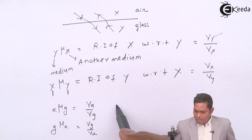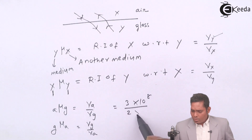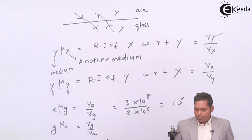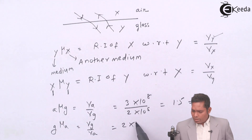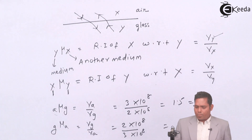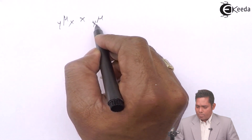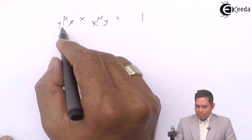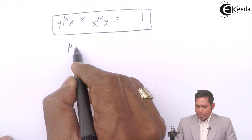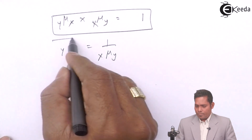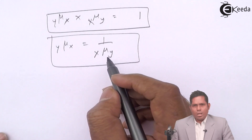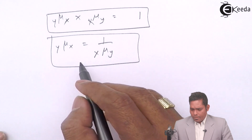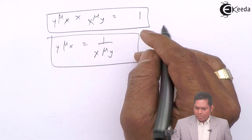For example, refractive index of glass with respect to air is 3 × 10⁸ divided by 2 × 10⁸, which is 1.5. But mu_ag is 2 × 10⁸ divided by 3 × 10⁸, which is 2/3. So these two are reciprocals of each other. Therefore, mu_xy × mu_yx = 1, which means mu_xy = 1 / mu_yx. This is an important result to remember.